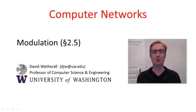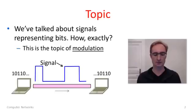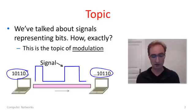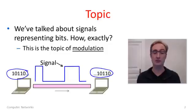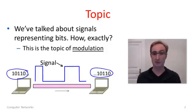G'day viewers. In this segment we'll talk about modulation, or how to represent bits as signals. Here is the setup you must know quite well by now. We have our computer on the left sending bits to a computer on the right across a link. But across the link we can't send bits literally — we send analog signals. So we need to work out some way to represent these bits with signals. That's called modulation and that's the topic of this lecture.